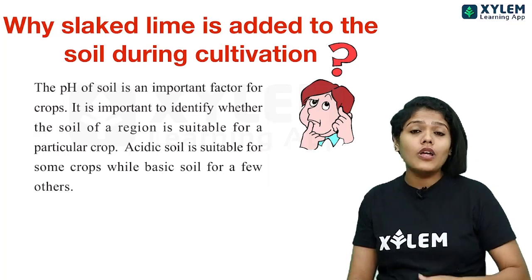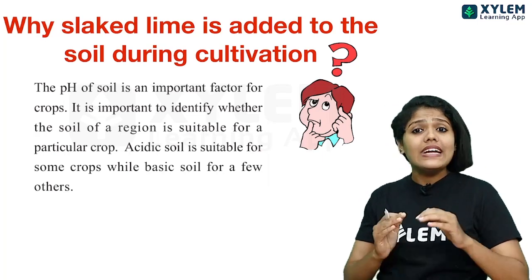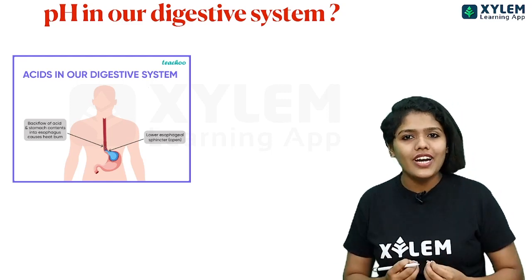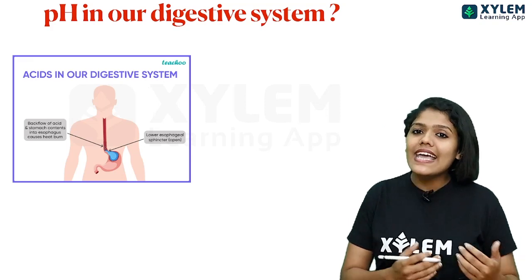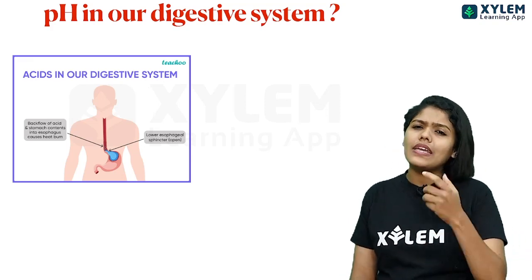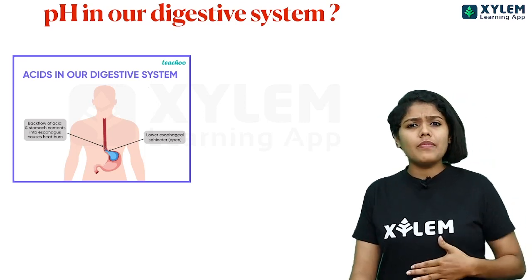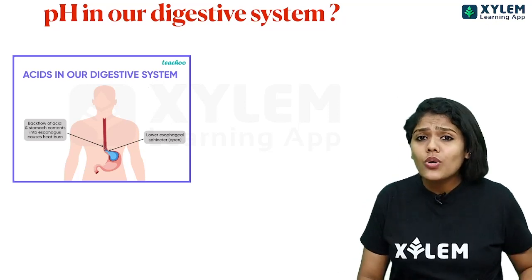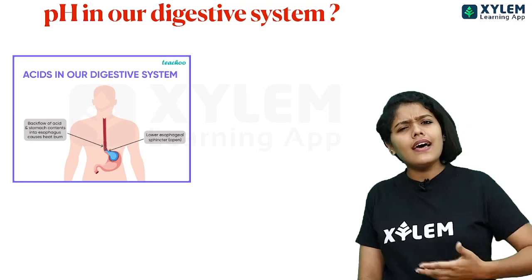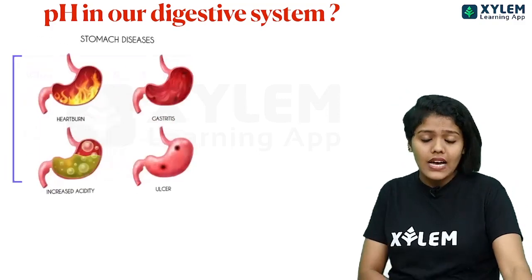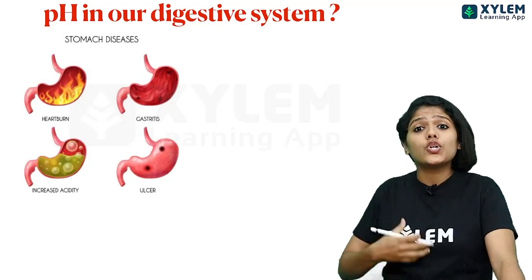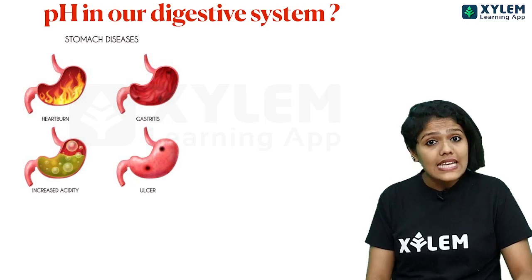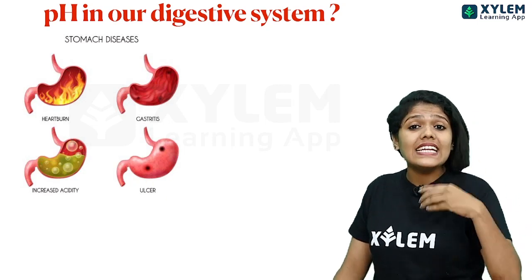Now let's see the next topic: pH in our digestive system. Our stomach produces hydrochloric acid (HCl), which helps in digestion. However, when there is excess acid in the stomach, problems such as heartburn and gastritis occur. The increased acidity causes discomfort and other digestive problems. We need to maintain the correct pH value in our stomach to avoid these issues.